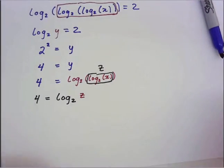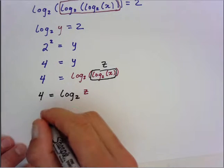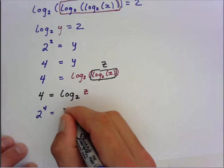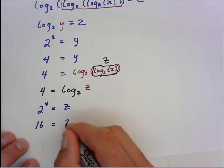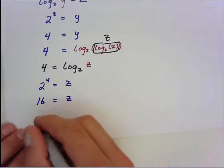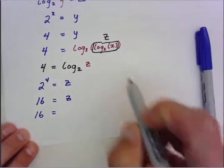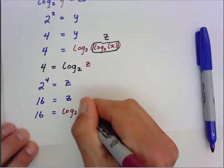So again, by definition, we know that 2 to the 4th equals z. Well, that means 16 equals z. So by definition and substitution, 16 is going to equal what z was. Z is up here, log base 2 of z.